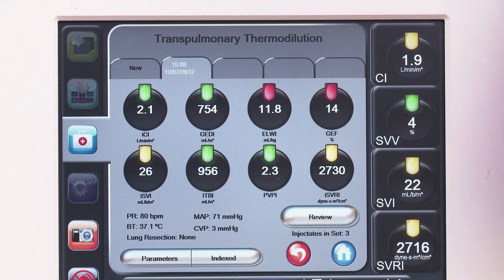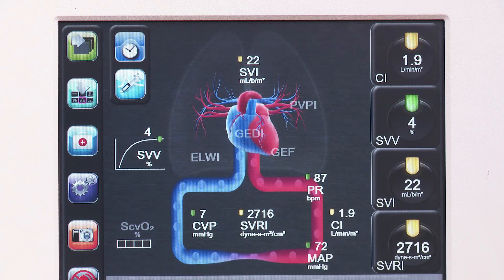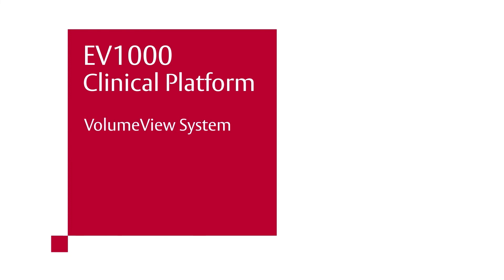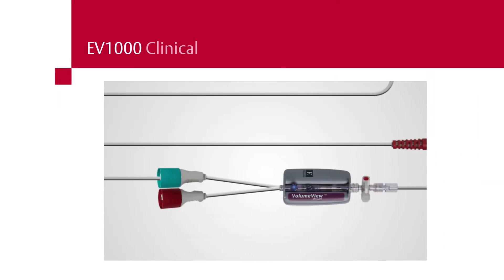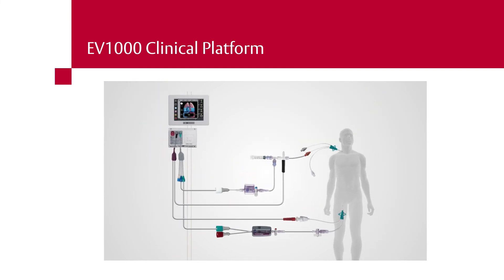Once Accept has been selected after editing the boluses, the continuous arterial pressure-based cardiac output will be calibrated, and only the continuous values configured for display on the monitor will appear. The EV1000 clinical platform, when used with the volume view set, offers a complete, unified monitoring system that provides a holistic view of clinically validated parameters. Experience what you need, when you need it, with the EV1000 clinical platform from Edwards Life Sciences.